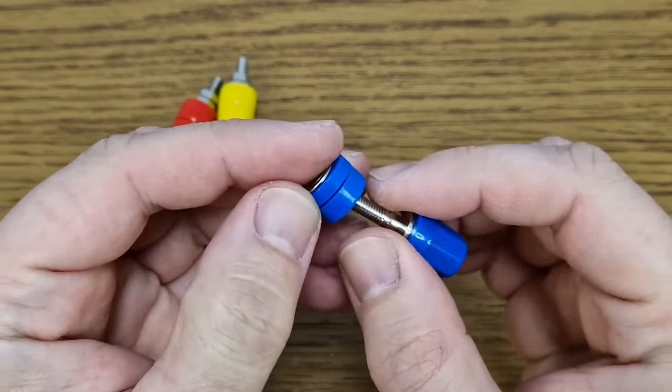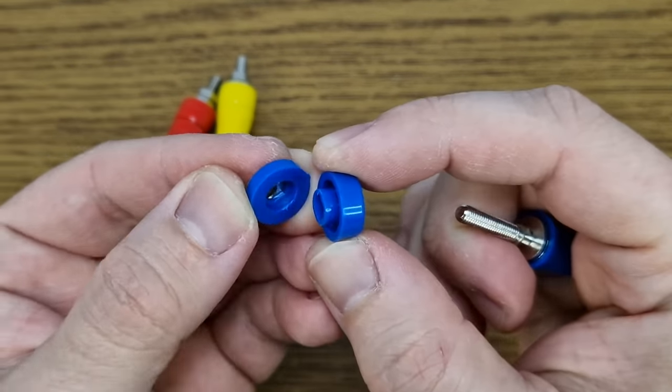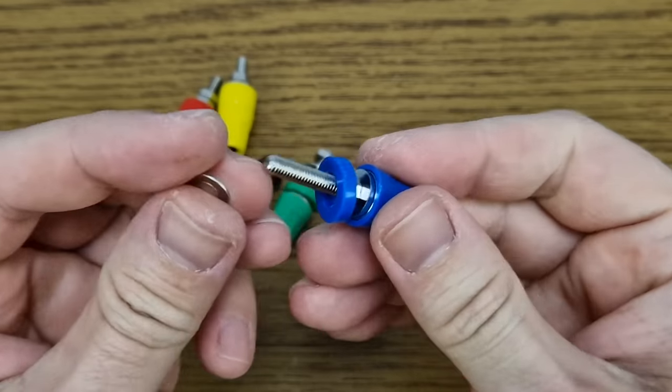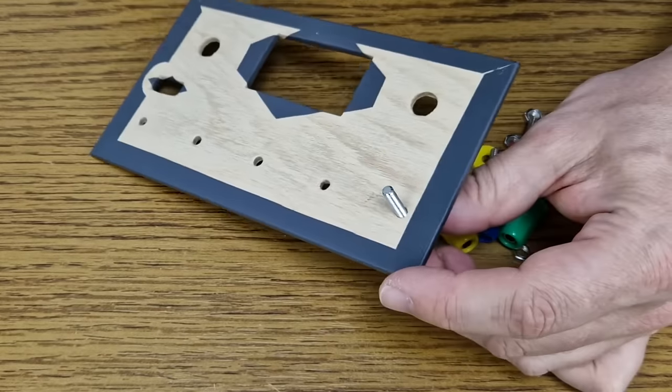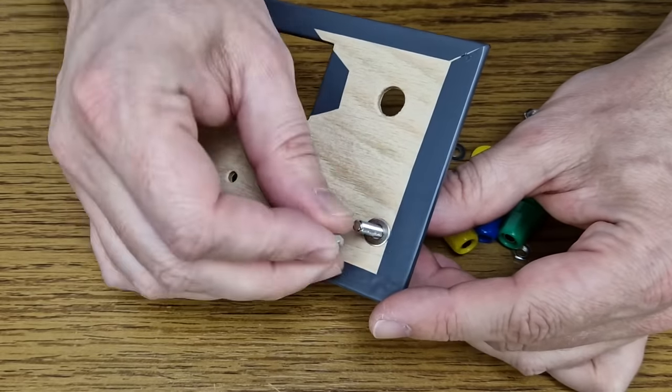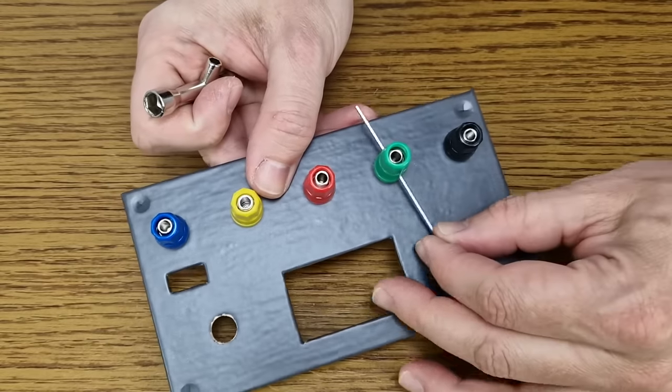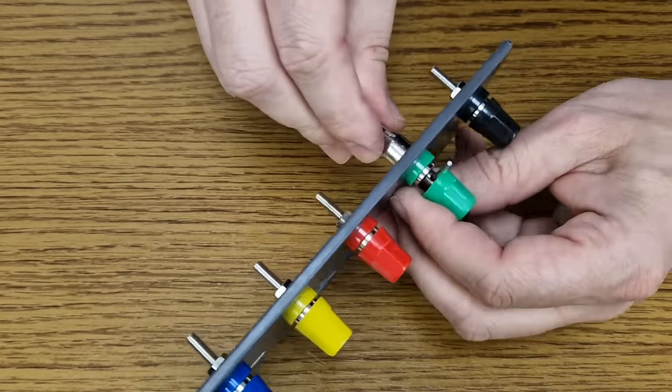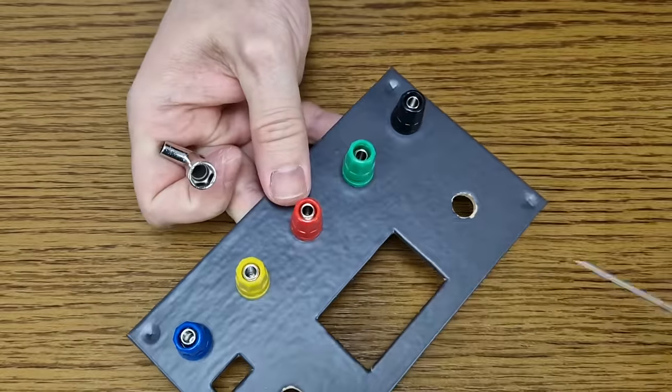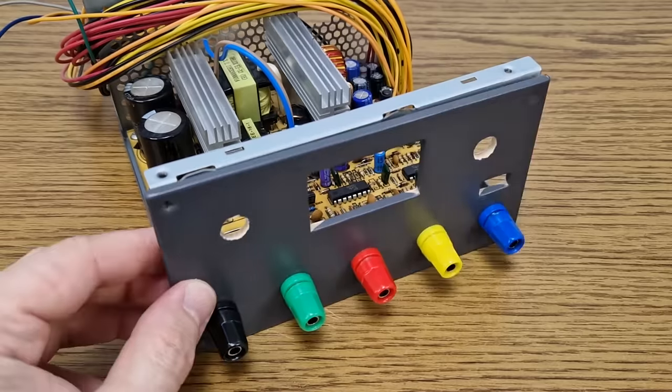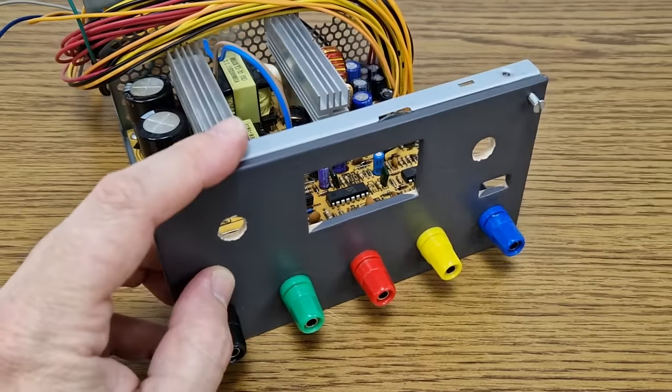If you mount the binding post on a metal panel, they need all the plastic parts to insulate the terminal from the metal panel. But I will place them on a plywood panel, so there is no need for the plastic insulator. I like these binding posts because they also have small holes to connect bare wires, without any plugs. I will temporarily fix the front panel in position with 2 screws.